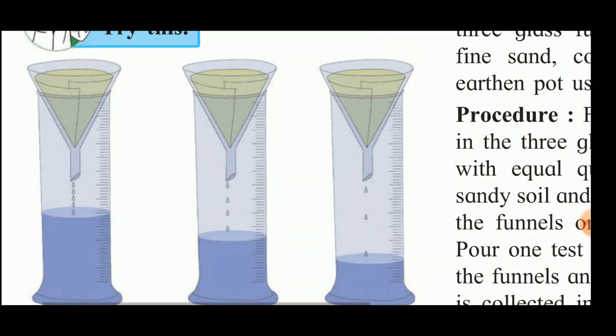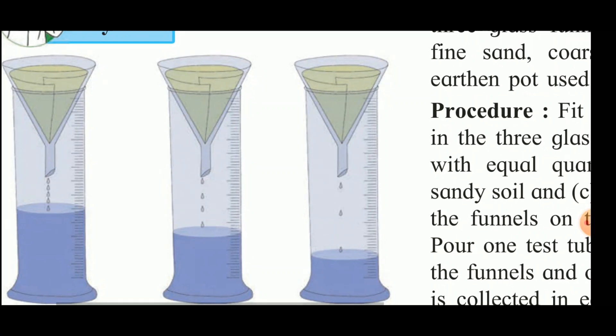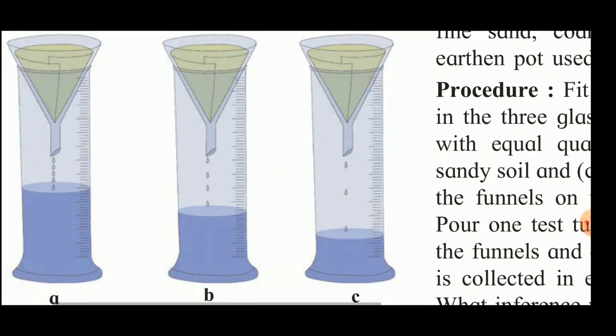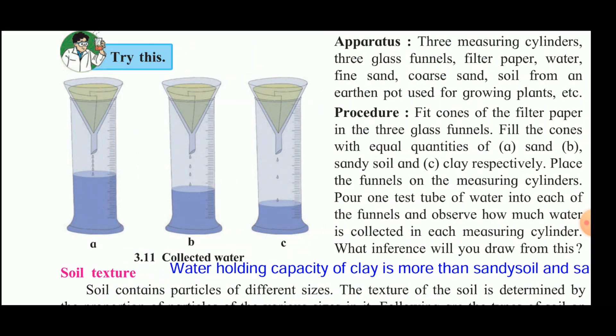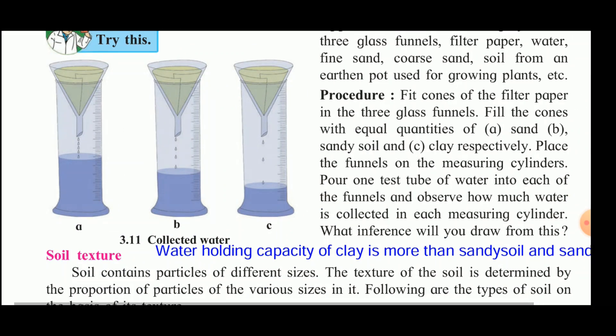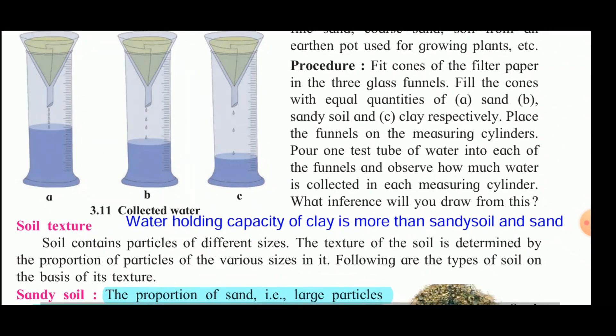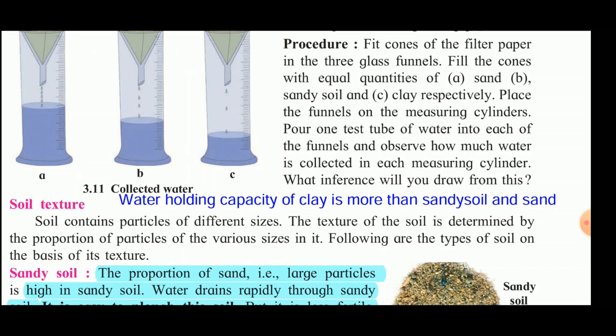The water-holding capacity of clay is the greatest — it holds most of the water from the test tube, so the water collected in the measuring cylinder is least. We can conclude that the water-holding capacity of clay is greater than sandy soil, and sandy soil is greater than sand. Next we will see the texture property of soil.